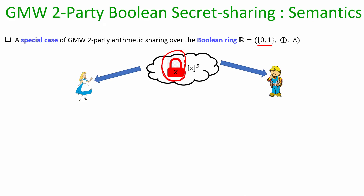To denote that bit Z is Boolean shared, the mathematical notation is square bracket Z with superscript B — B denotes Boolean sharing. Square bracket Z means neither Alice nor Bob can in isolation find out the value of Z from their respective share alone, but their combined shares allow them to find out the value.